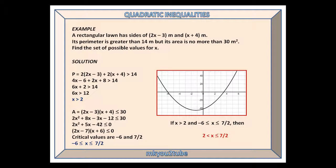Using our quadratic inequalities approach, we find that minus 6 is less than or equal to x, which is less than or equal to 7 over 2. Combining our two results — if x is greater than 2 and x is between minus 6 and 7 over 2 — then we get 2 less than x less than or equal to 7 over 2.